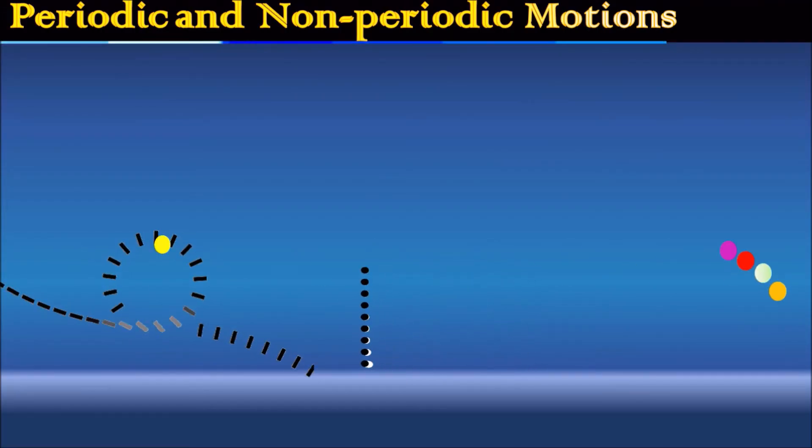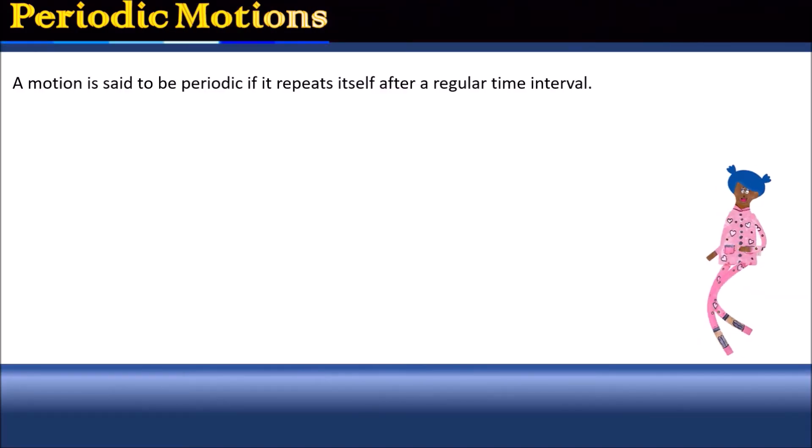Periodic and non-periodic motions. This is interesting. Listen carefully. The type of motion which repeats itself after a regular interval of time is periodic motion.